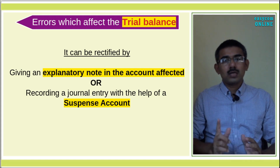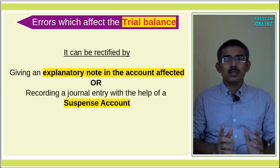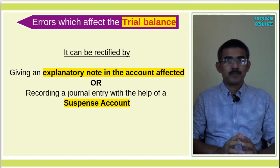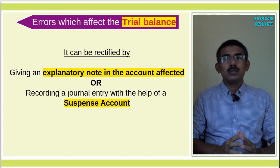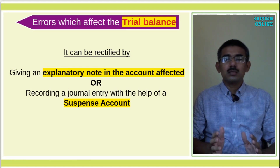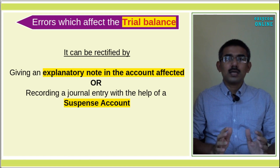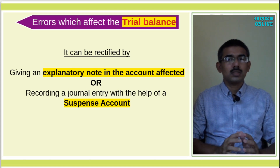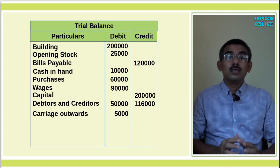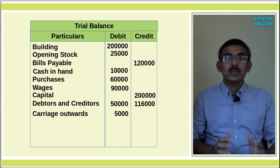When one account is affected and a journal entry is needed, we use the suspense account method. In the case of a one-sided error, a journal entry is opened using the suspense account. This method uses the suspense account to balance the trial balance.